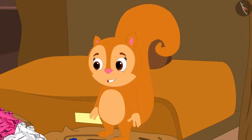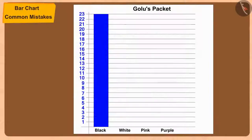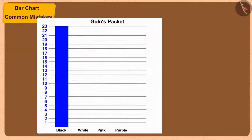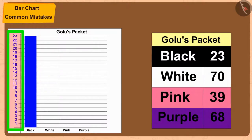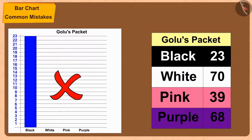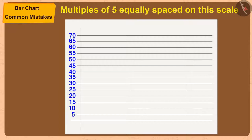Chanda tells Golu he has chosen the wrong scale when creating the bar chart. Whenever we want to create a bar chart, we must first find the largest number in the data — in Golu's case, that is 70. Since Golu wrote equally spaced numbers from 1 to 23, he cannot show 70. But if we write multiples of 5, equally spaced on the scale, then 70 can easily be shown.